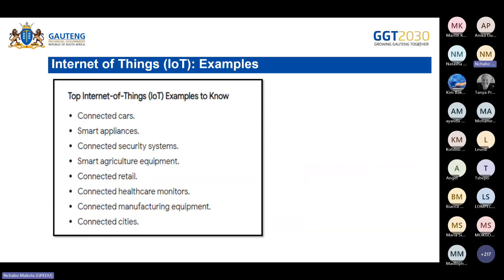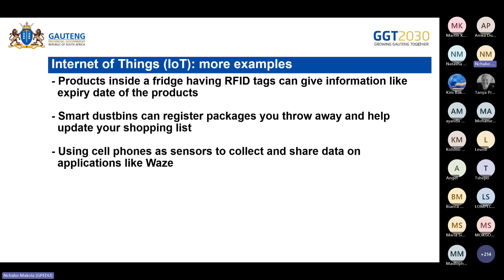Different examples of IoT include connected cars, smart appliances, connected security systems, smart agriculture equipment, and connected retail. Other examples: products inside a fridge with RFID tags can provide expiry date information; a smart dustbin can update your shopping list when you throw something away; and sensors on your cell phone can collect and share data on navigation apps like Waze when you are traveling.